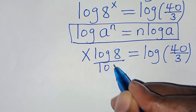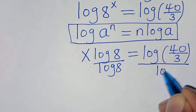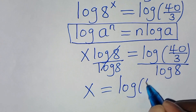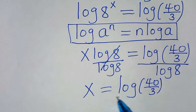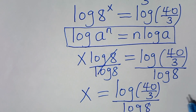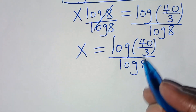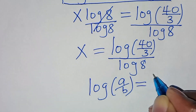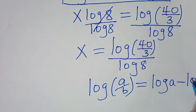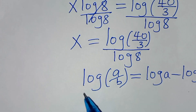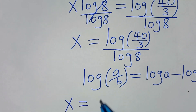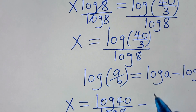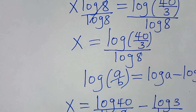Now let's divide both sides by log 8, so that the value of x equals log(40/3) divided by log 8. Now, log(40/3) is in the form of log(a/b), which we can express as log a minus log b. So this implies that x equals (log 40 minus log 3) divided by log 8.